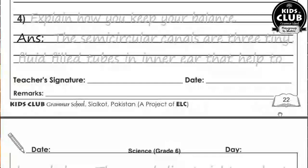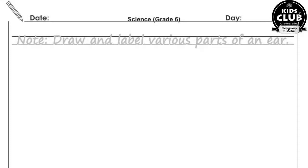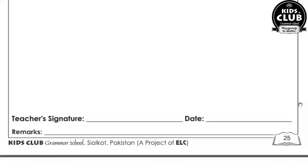Question number four: Explain how you keep your balance. The semicircular canals are three tiny fluid-filled tubes in the inner ear that help to keep balance. The canals lie at right angles to each other and have nerve cells in their walls. When our head moves, the liquid inside the semicircular canals sloshes around and this movement is detected by the nerve cells, which send signals to the brain. This works as a type of motion sensor to keep our balance.